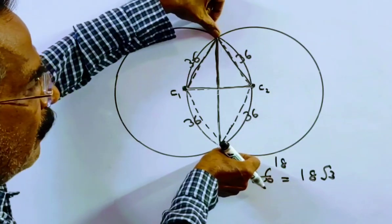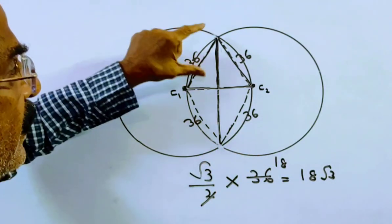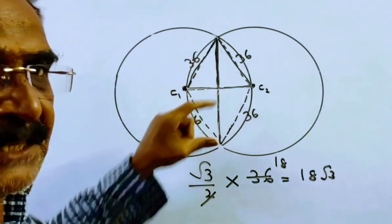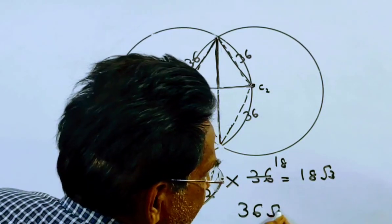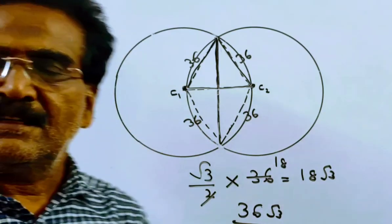So the length of the common chord is 18 root 3 plus 18 root 3, which equals 36 root 3. Therefore, 36 root 3 is the length of the common chord. Thank you.